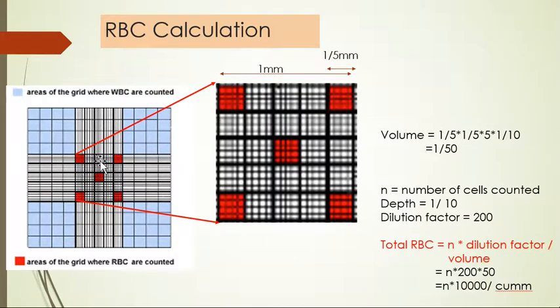Within all 25 squares, we count RBC in only these five which are filled with red color. This whole large square is 1mm. One square width and breadth both are 1mm, so one square is 1/5mm.